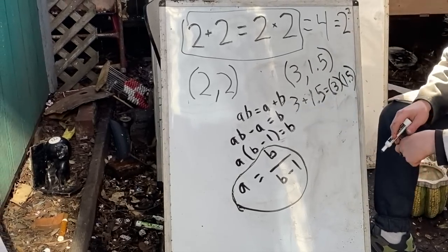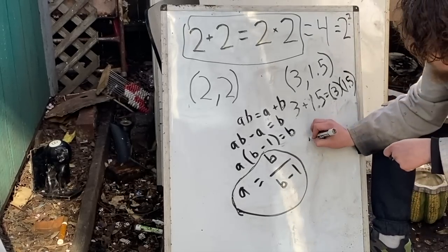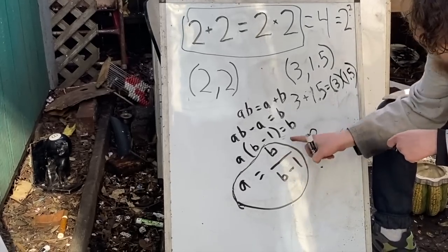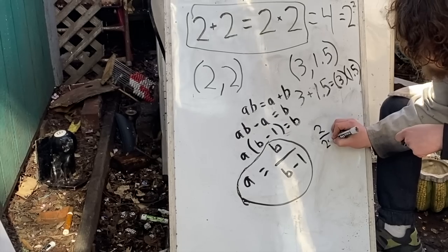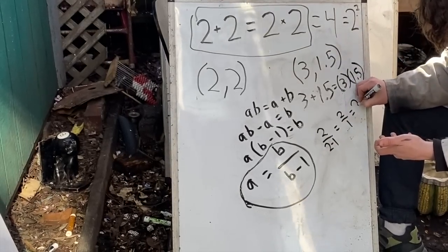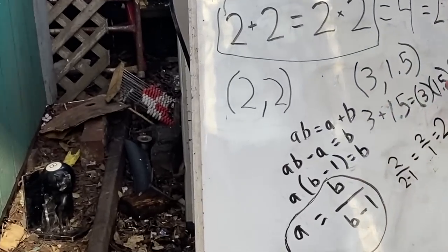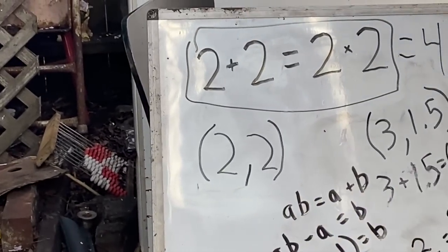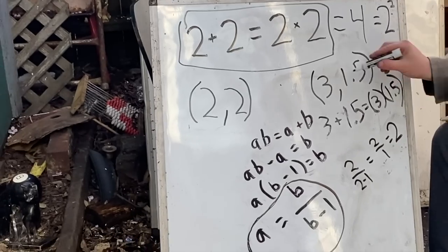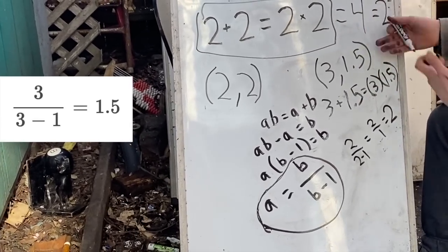Like if I decide I want one of my numbers to be 2, I can plug in 2 for that b and say that a is equal to 2 over 2 minus 1, which is 2 over 1 or 2, telling me that if one of the numbers is 2, the other number is also 2, that original case. But I could also plug in 3 and have gotten 1.5 or vice versa.